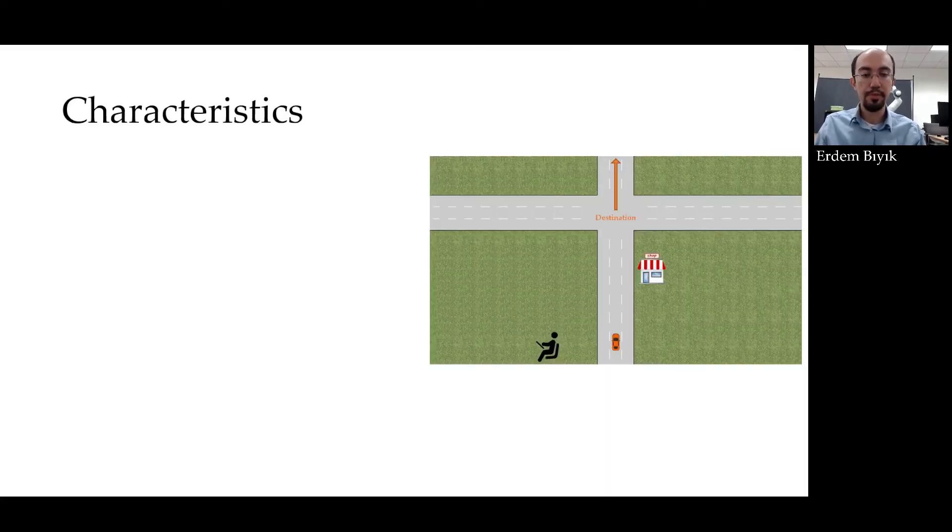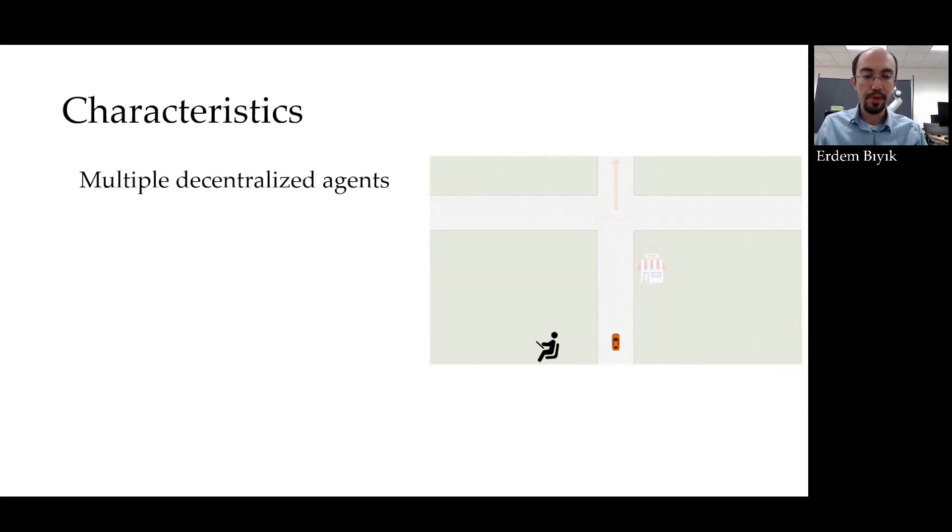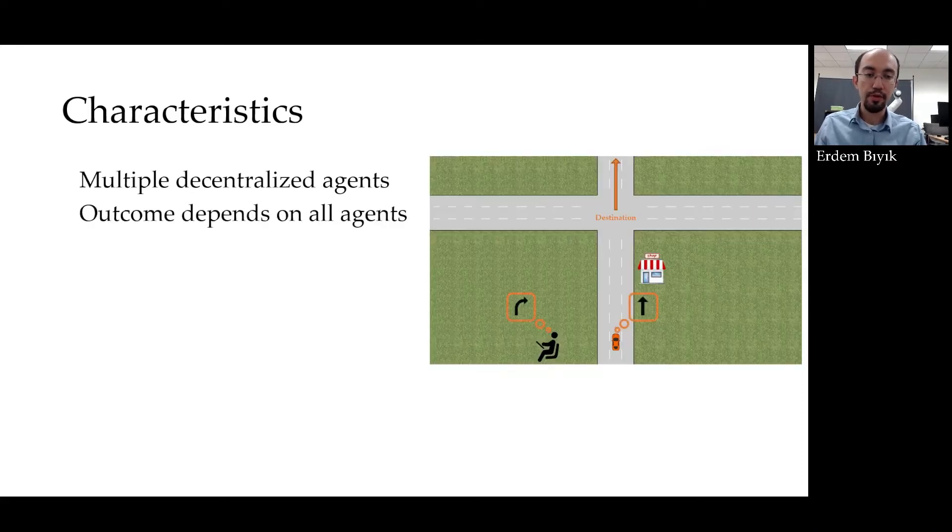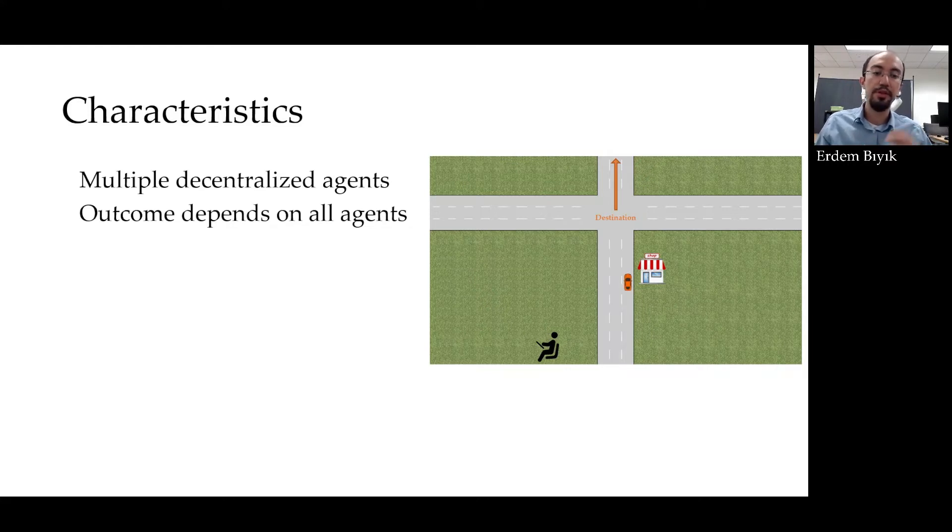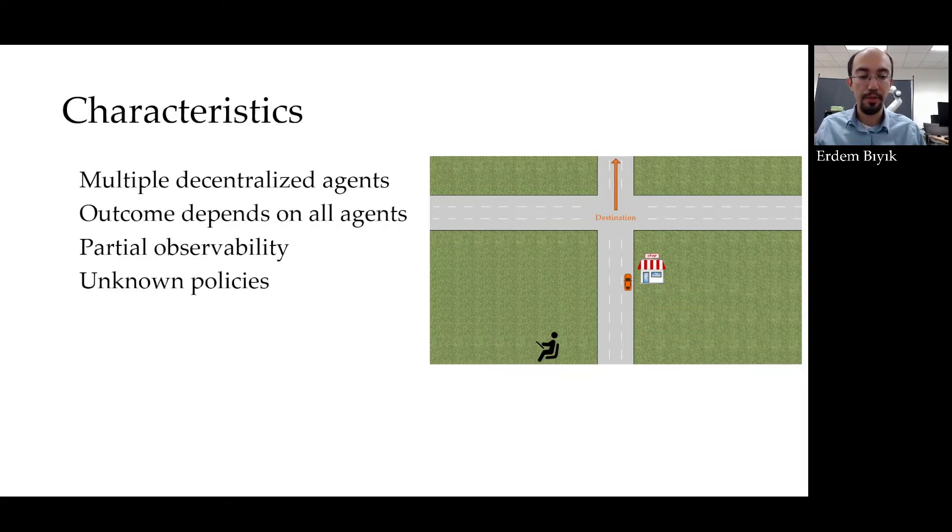Let me now characterize the properties of the problem that I have just described. First, we will have multiple decentralized agents. In the most general form, the outcome will depend on the actions of all agents. So, my reward is affected by other sections too. For example, in the driving scenario, the comfort and the safety of the vehicle's trajectory depends on the actions of the water driver and the autonomy. We will also have some kind of partial observability for each agent. In this example, the autonomy was not always observing the true outcome. And finally, the policies of other agents will be unknown to me. And that's the reason why we have a conflict between the driver and the autonomy here. If autonomy were able to predict the driver's action, it could effectively help them achieve a safer and more comfortable trajectory.